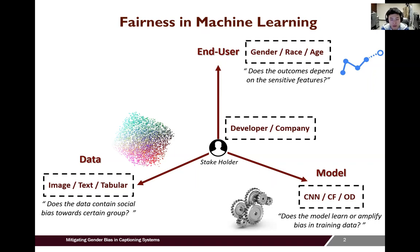From the user perspective, they care about whether the outcome depends on the sensitive features, such as gender, race, and age. All of those questions should be considered by the stakeholder, for example, the model developer and the company.